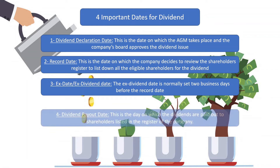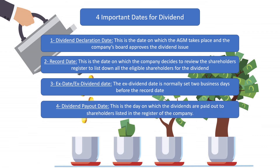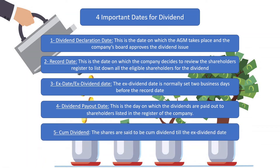The next is the dividend payout date. This is the date on which the dividends are paid out to the shareholders listed in the register of the company. Another important date is cum dividend, where the shares are said to be cum dividend till the ex-dividend date.